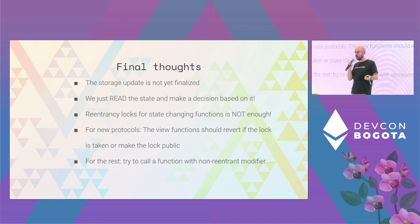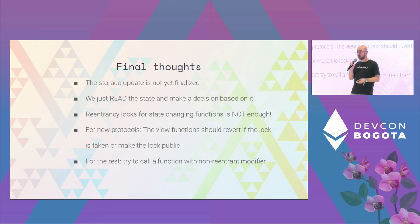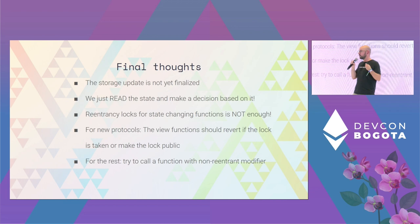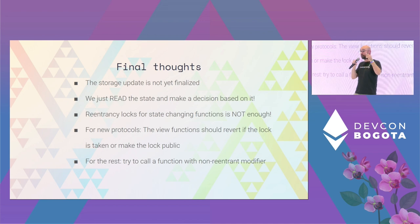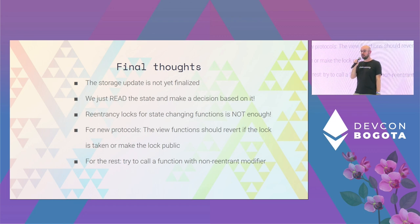How can we prevent this attack? One way is to make the lock from the non-reentrant modifier public. This works for new protocols being developed. For existing protocols, the more efficient solution is: when you try to read the state of a smart contract, first try to call a function that is non-reentrant protected. If this call fails, then it means you are in the middle of a re-entrancy and you should not read the state of the contract.